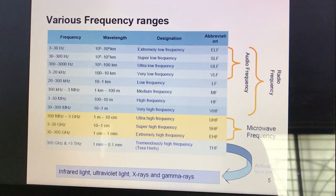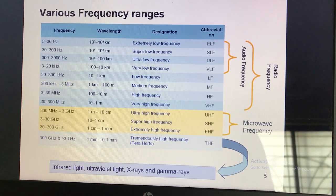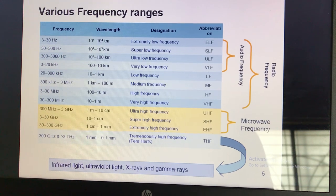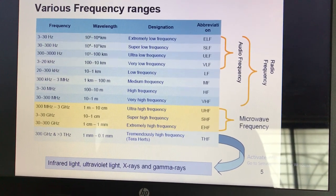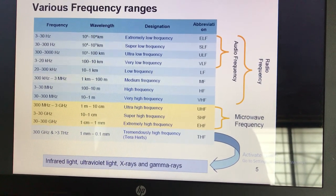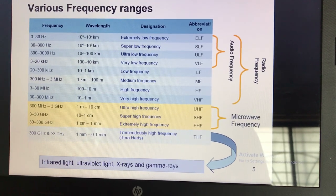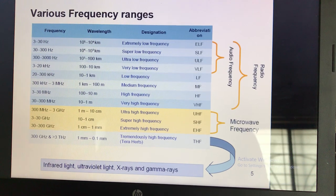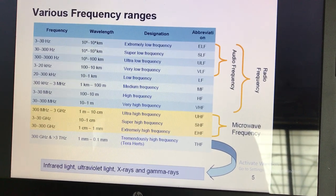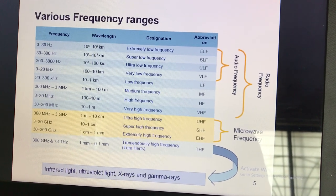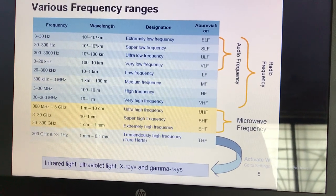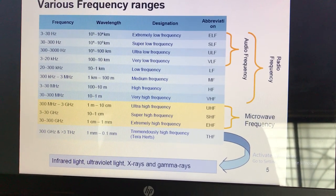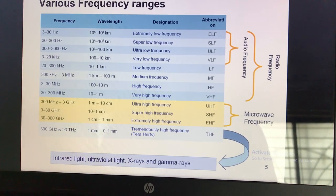The frequency bands table shows wavelength in meters. Frequencies from ELF to VLF form the audio frequency range, used from 20 Hz to 20 kHz where humans can hear signals. From ELF to Very High Frequency is the radio frequency range where modulation techniques are used. Ultra High Frequency to Extremely High Frequency is the microwave frequency range, from 300 MHz to 300 GHz.